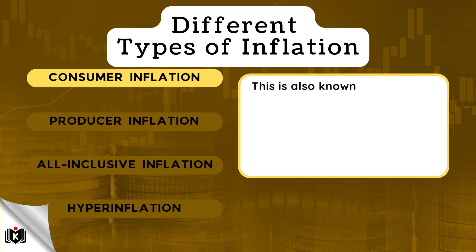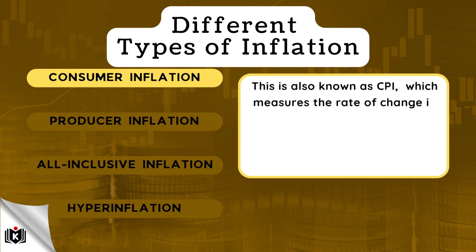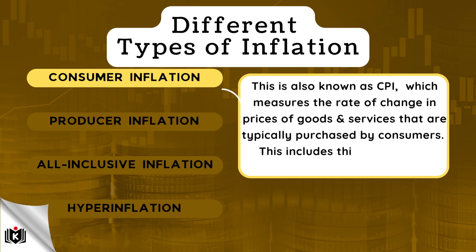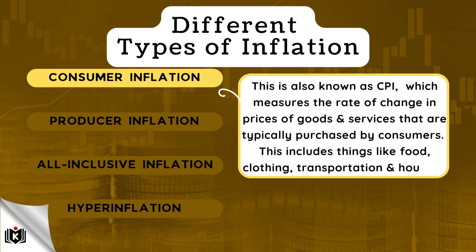Consumer inflation is also known as CPI, which measures the rate of change in prices of goods and services that are typically purchased. This includes things like food, clothing, transportation, and housing.